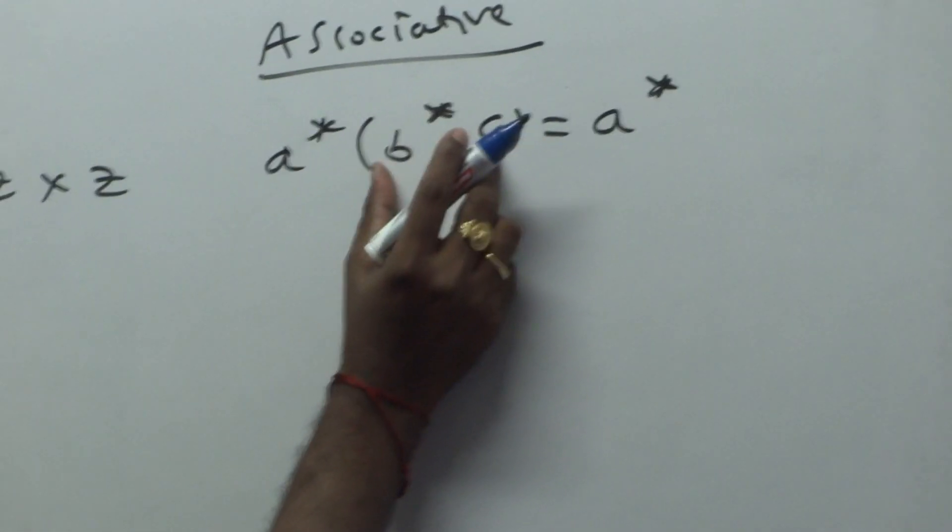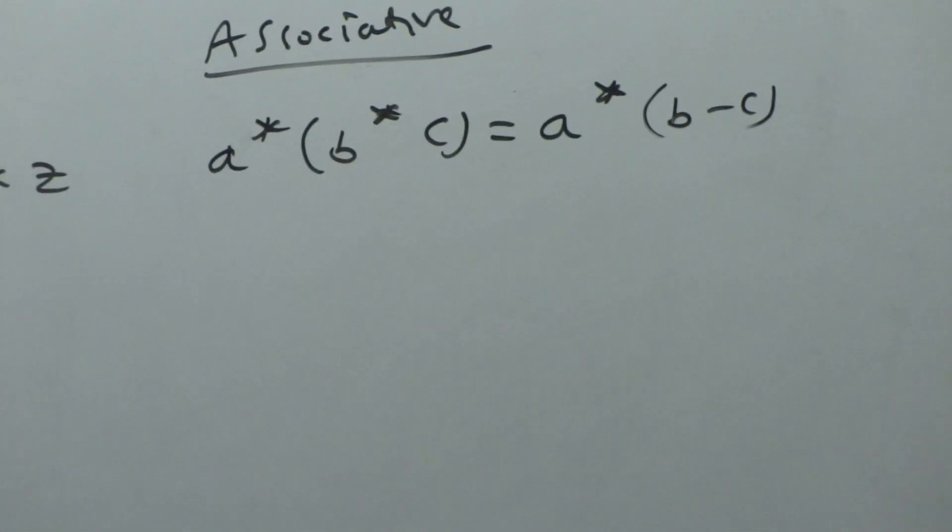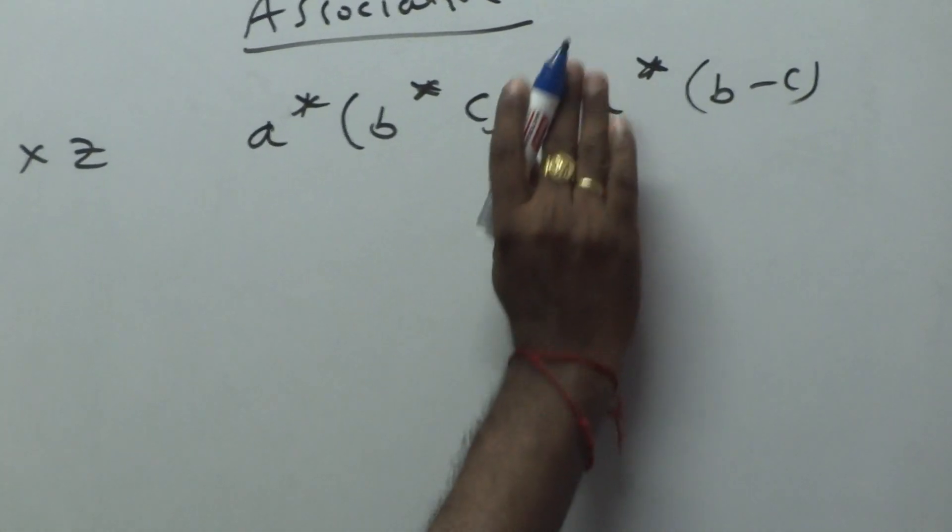A star, B star C means B minus C. Because the given operation A star B is A minus B. B star C means B minus C. Now this is A. This fully is B.